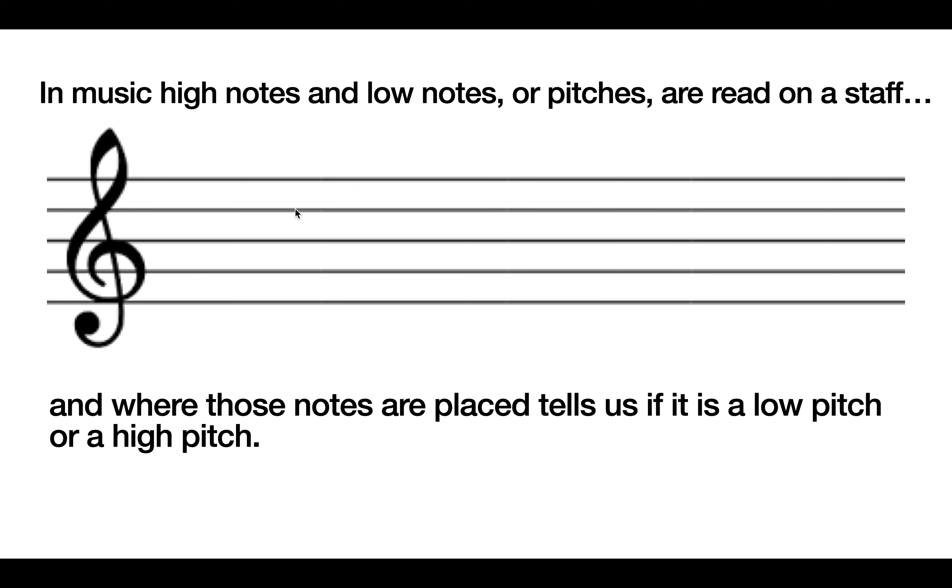are read on a staff, like this one. That staff has five lines: one, two, three, four, five. Where those notes are placed tells us if it is a low pitch or a high pitch. But they could also be anywhere in between, like that.